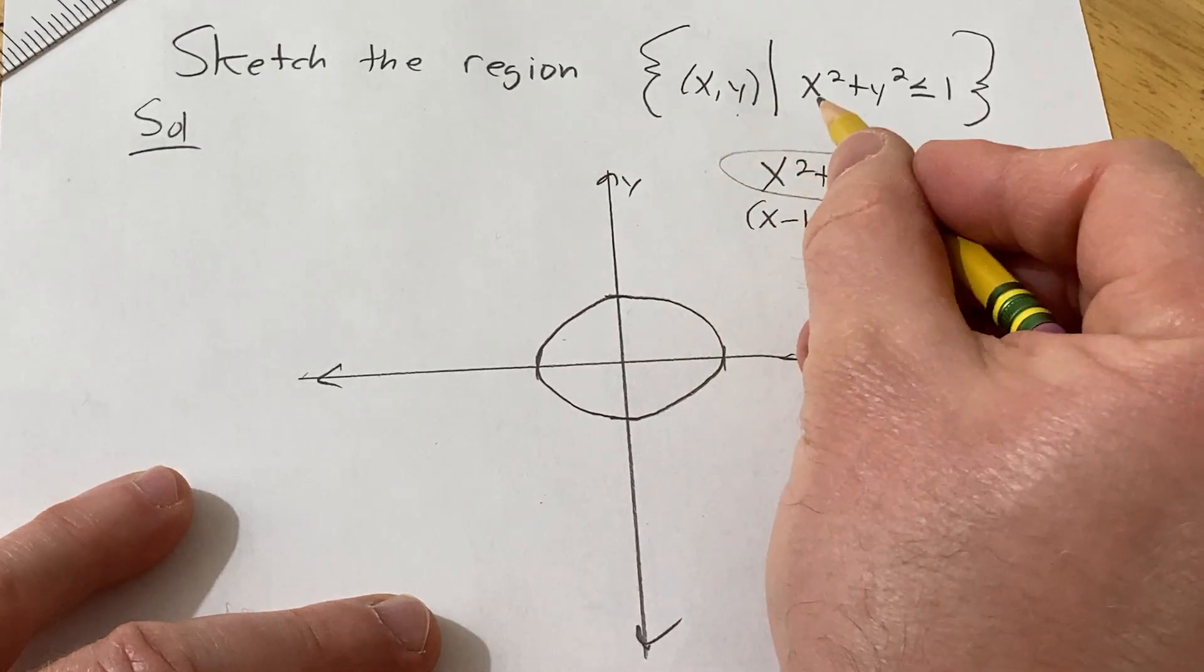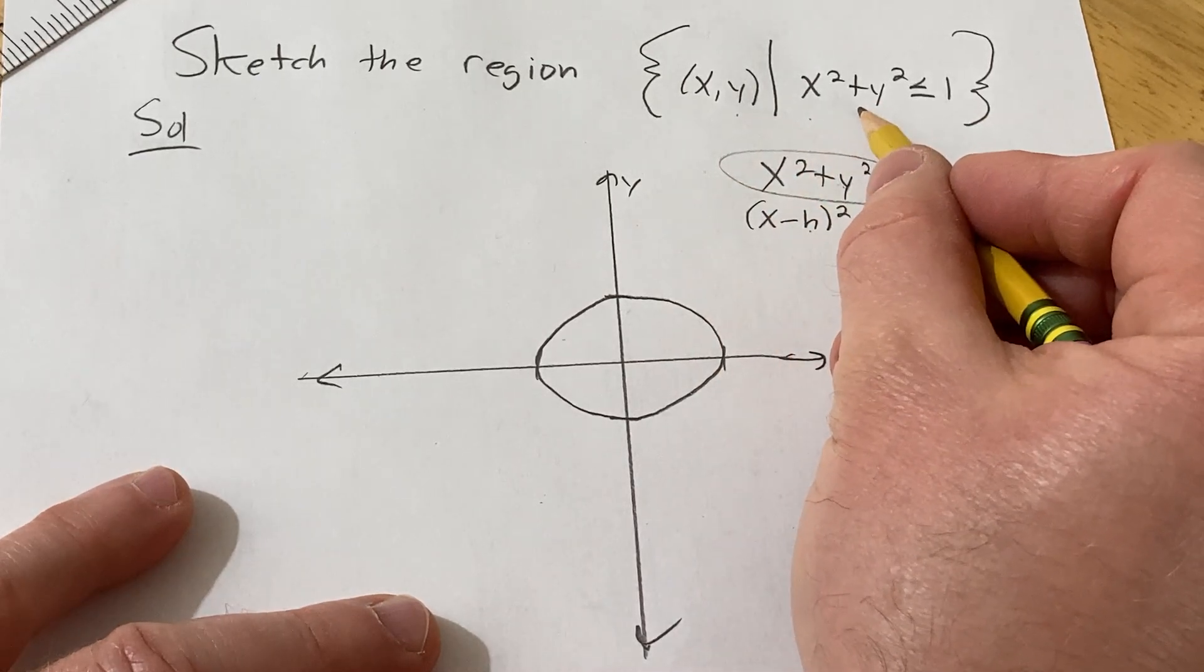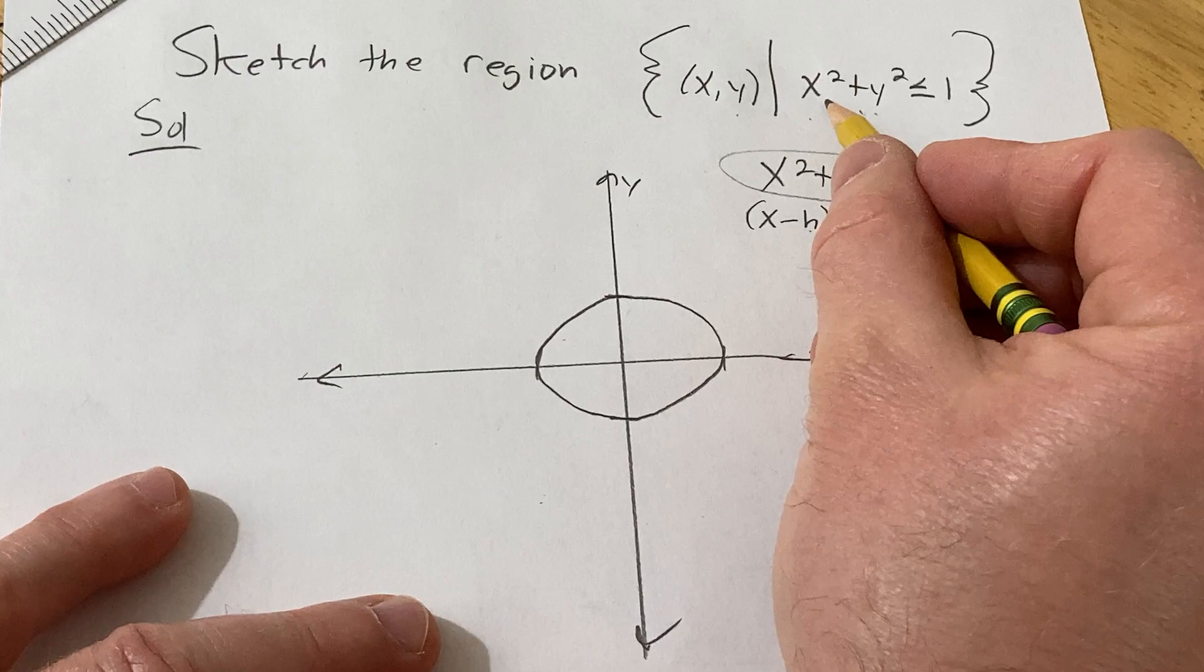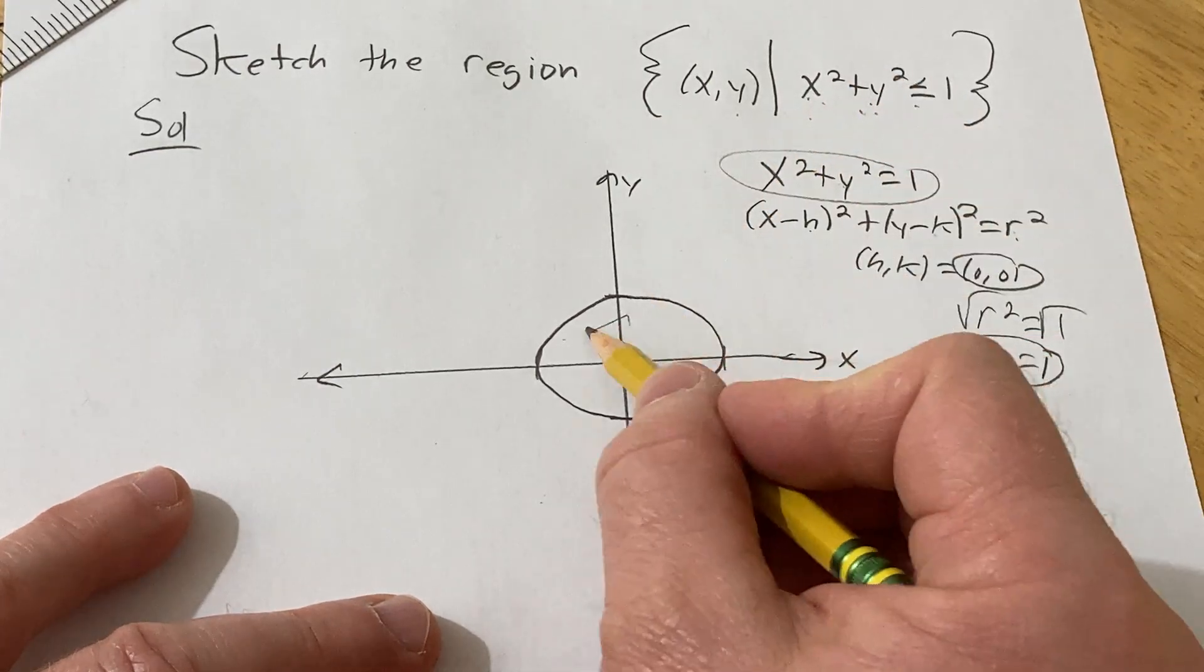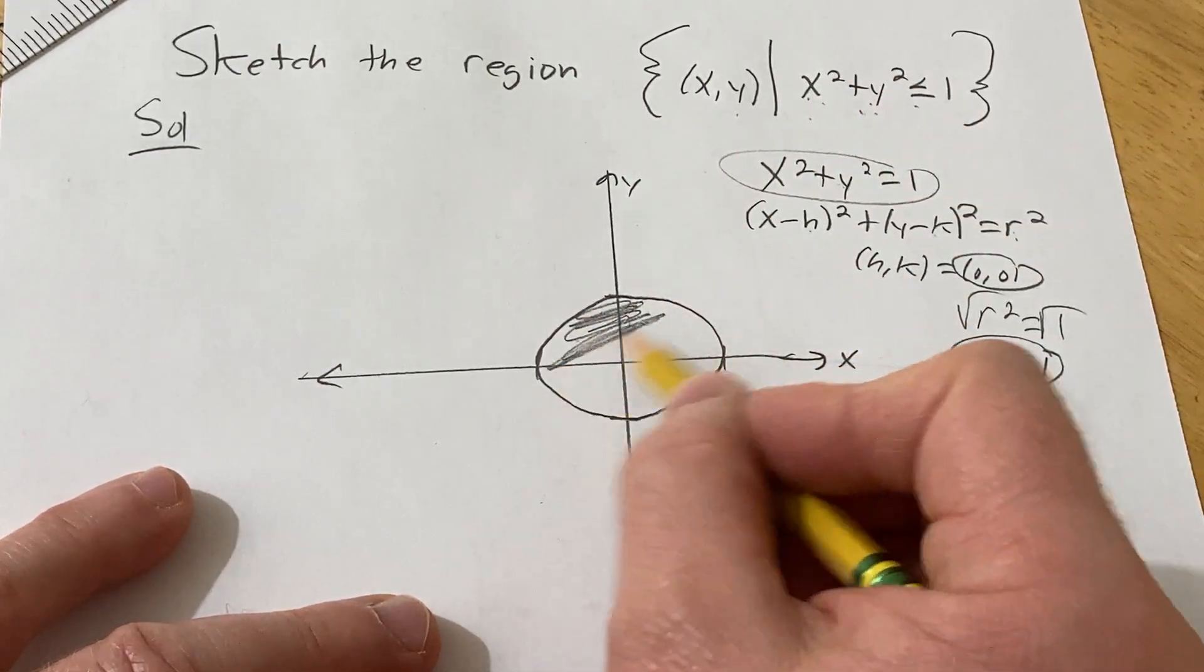But this set doesn't just contain the circle. It contains all the points inside the circle because you have to have x squared plus y squared less than or equal to 1. So it's basically everything in here.